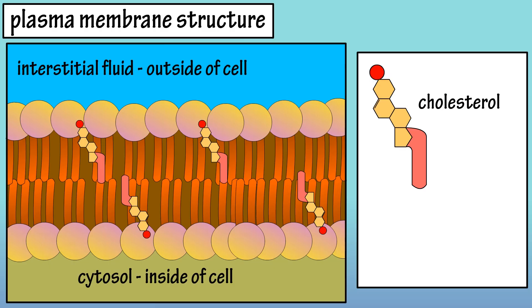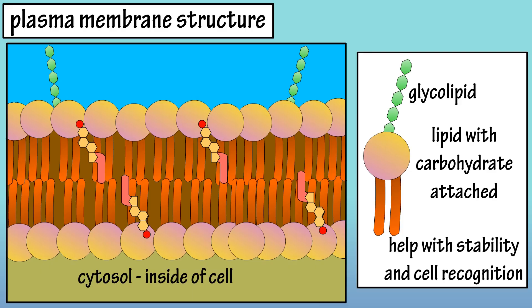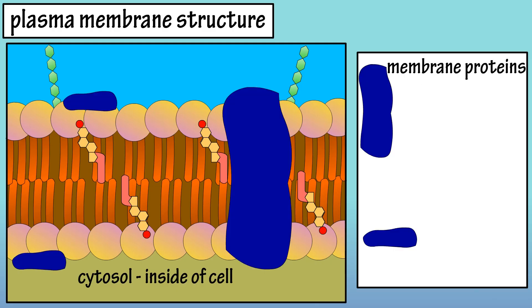Cholesterol is another molecule that is embedded in the plasma membrane and it helps strengthen and stabilize the membrane. Glycolipids are lipids with carbohydrates attached to them and they are found on the outer portion of the membrane, so they are exposed to the outside of the cell or the interstitial fluid that surrounds cells.